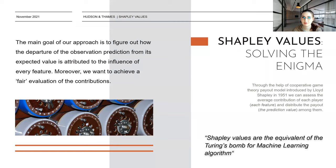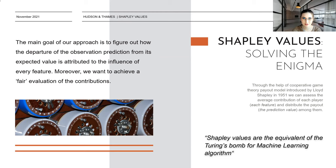So what are Shapley Values and how do they help us solve this enigma? Through the help of cooperative game theory payout model introduced by Lloyd Shapley in 1951, we can assess the average contribution of each player — in our case each feature — and distribute the payout — in our case the prediction value — among them. Basically, the main goal of our approach is to figure out how the departure from the observation prediction and the expected value is attributed to the influence of every single feature. Moreover, we want to achieve a fair evaluation of the contributions. The concept of fairness will be discussed later — it's an important one.